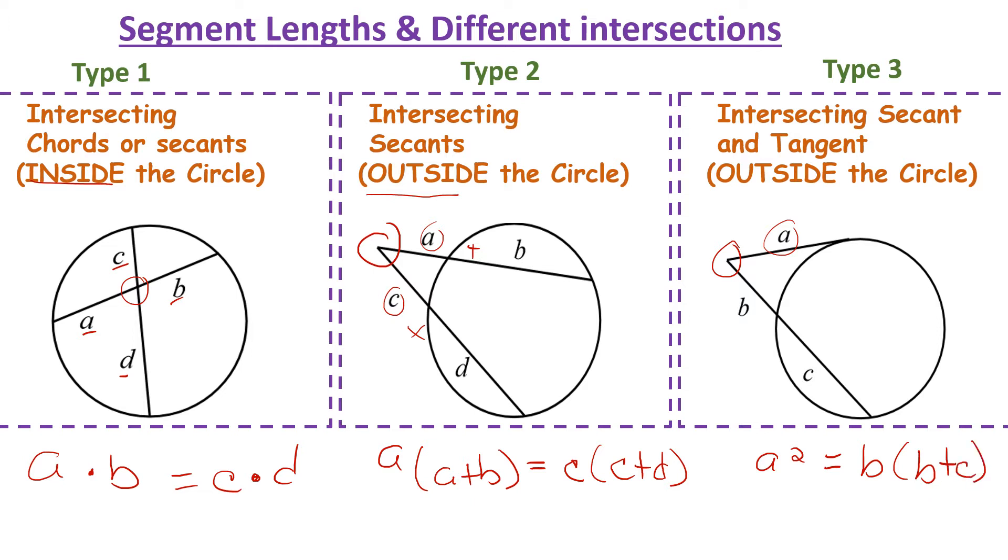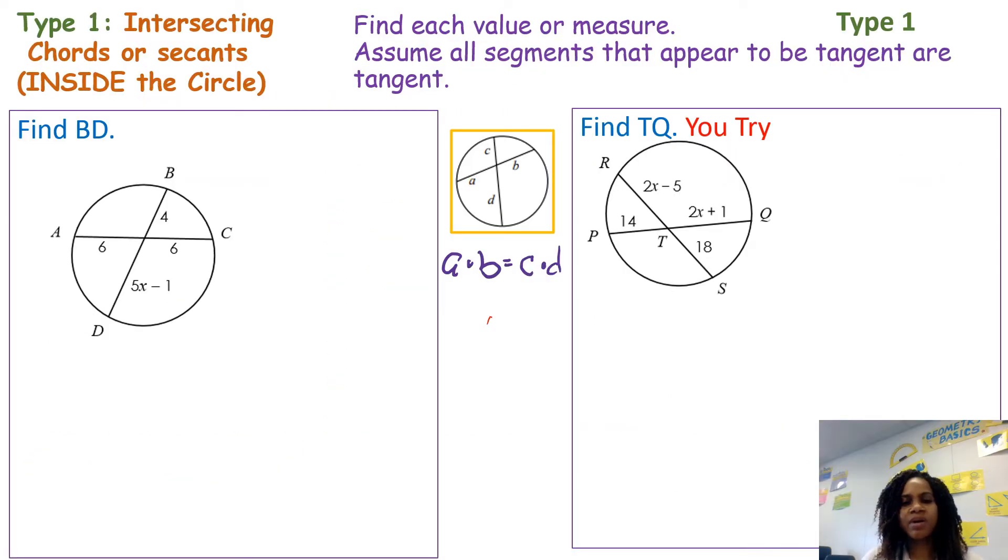We're going to use these formulas to solve some problems involving intersecting chords, secants, and tangents. The first one we're going to look at is type 1 where you have the intersection inside of the circle. I have the formula in the middle right here. You're basically multiplying both numbers that are on the same line.